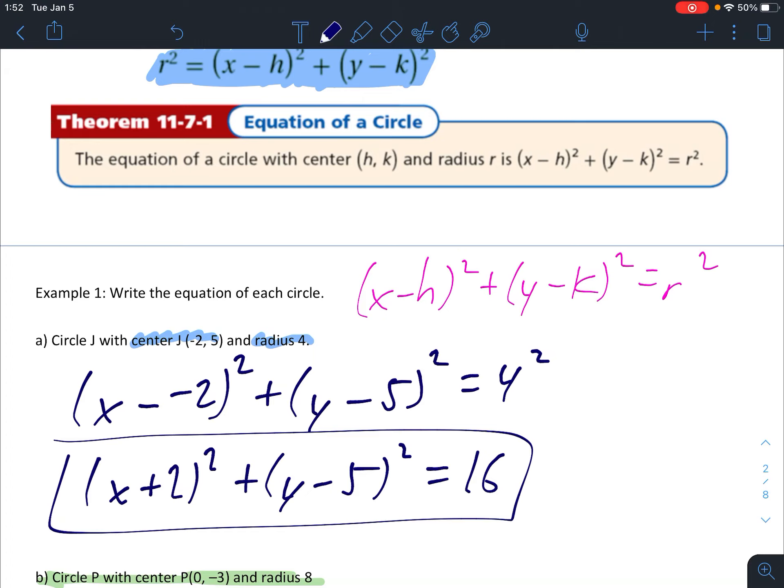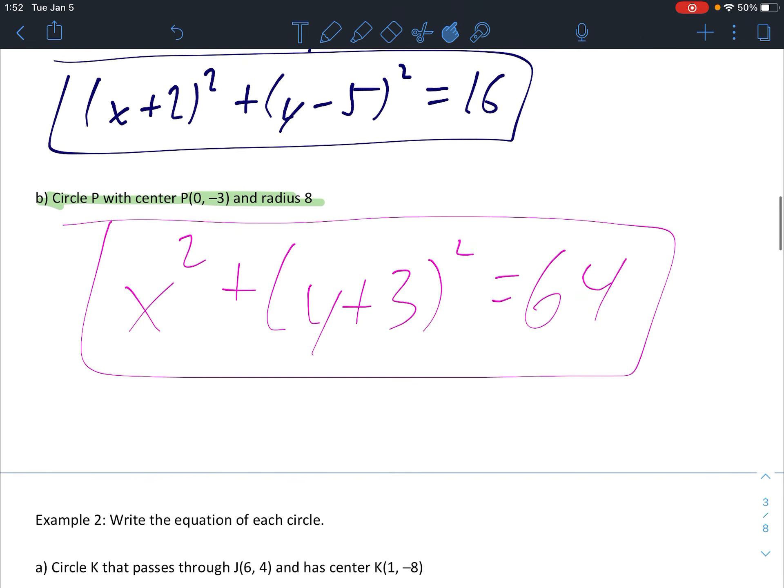Pause the video and please try problem 1b. Here's the answer you should have came up with for problem 1b. Notice I just have x squared by itself. That's because you should have written hopefully x minus 0 squared. And x minus 0 is of course just x.